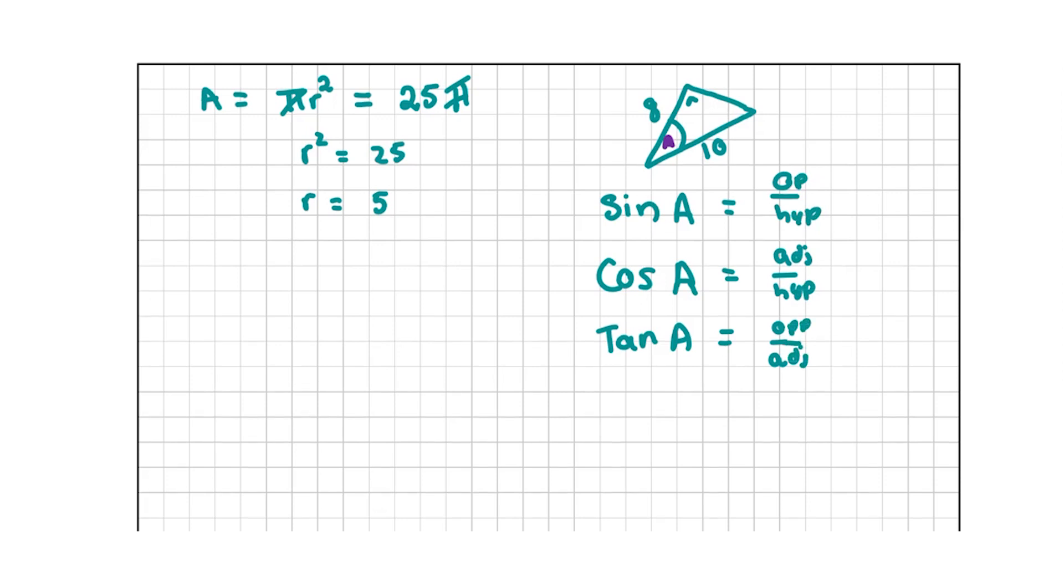Let's see what we have. We have 10, which is the hypotenuse. This is the opposite because it's opposite the angle we're looking for. And this here is the adjacent. So we have the hypotenuse and the adjacent, so we're going to use the cos of A. The cos of A is equal to the adjacent, which is 8, over the hypotenuse, which is 10.